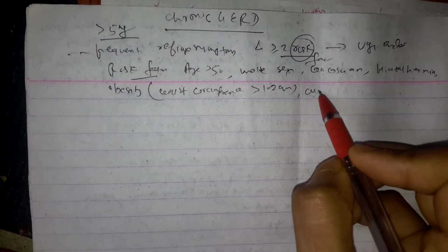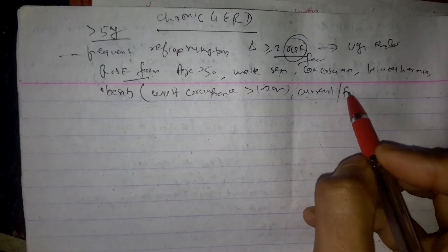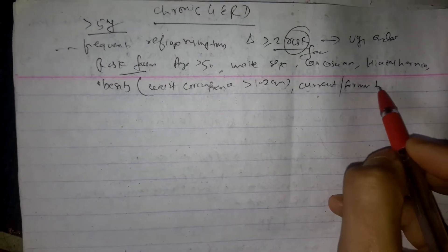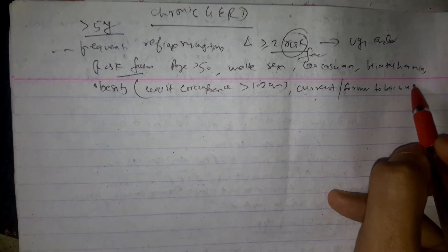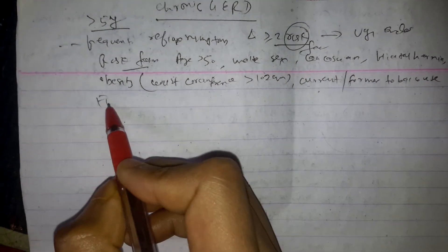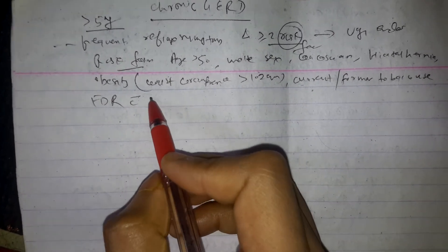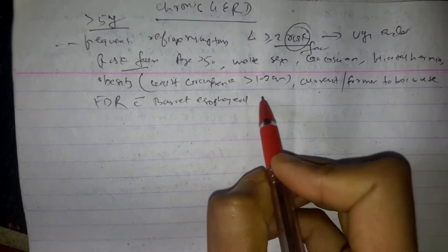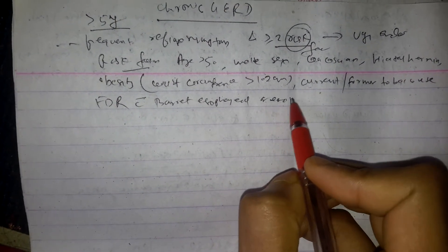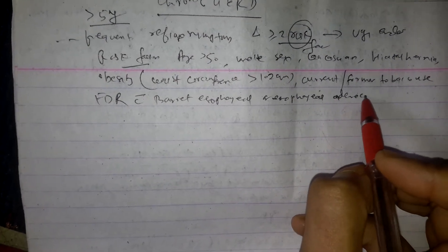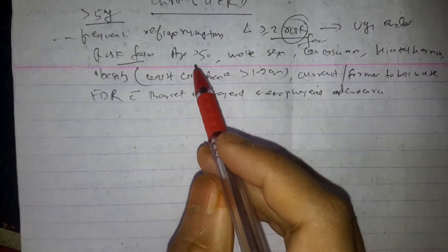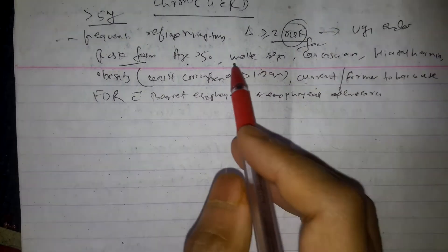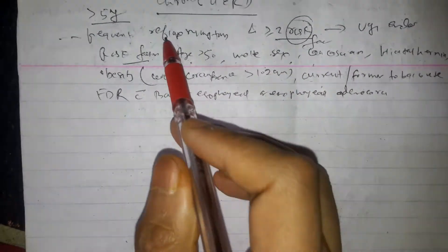And current or former tobacco use, and first degree relative with Barrett esophagus or esophageal adenocarcinoma. So if there is two or more risk factors among these and the patient has frequent heartburn, then that patient should also undergo screening for Barrett esophagus.